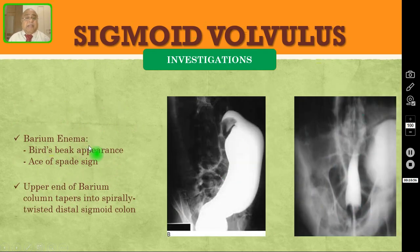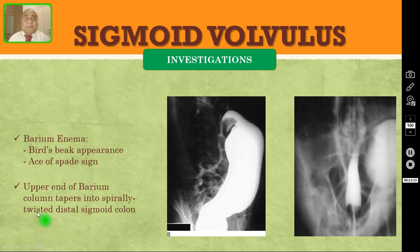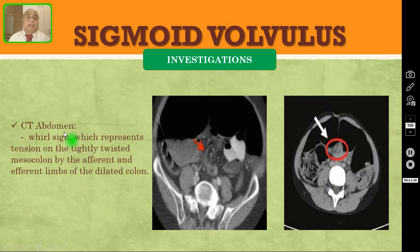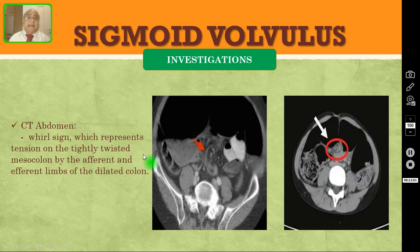Another investigation is barium enema, which will show the characteristic bird's beak appearance — also called the ace of spades sign. The upper end of the barium column tapers into the spirally twisted distal sigmoid colon. But nowadays we are not doing this test. In doubtful cases you can do CT abdomen, which will show the characteristic whirl sign or whirlpool sign, which represents the tension on the tightly twisted mesocolon by the afferent and efferent limbs of the dilated colon. This is very characteristic CT finding, and you can do it only for doubtful cases.